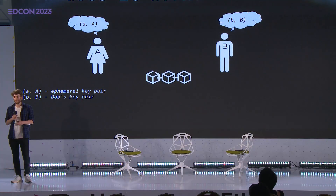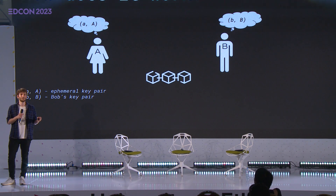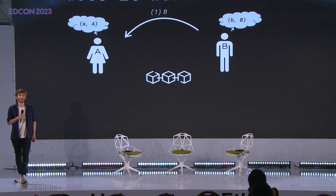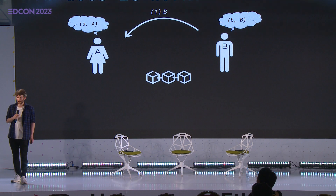Essentially, Bob has his own key pair and Alice can just create a random key pair. This is important: Alice is not using her own key pair. Alice is actually using a randomly generated key pair to generate the stealth address. So the first step is that Alice derives the public key of Bob. The public key is public, so this is no challenge for her.